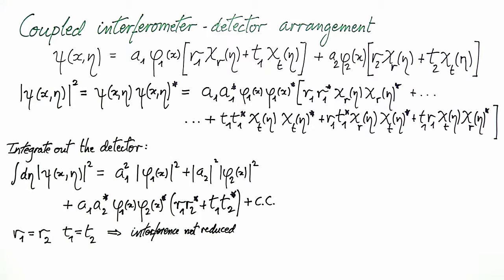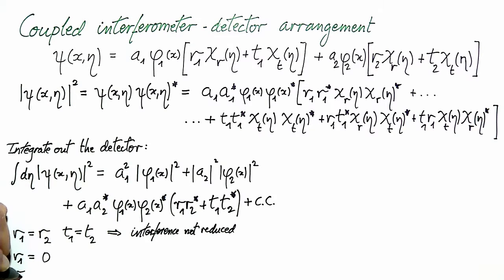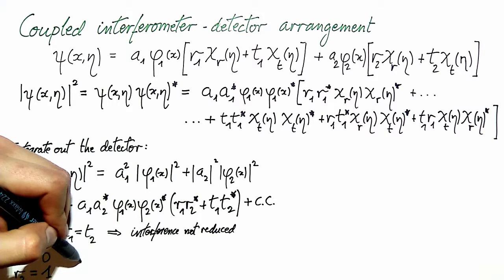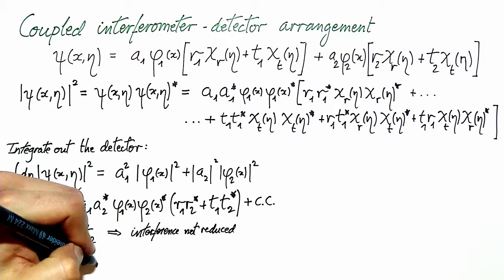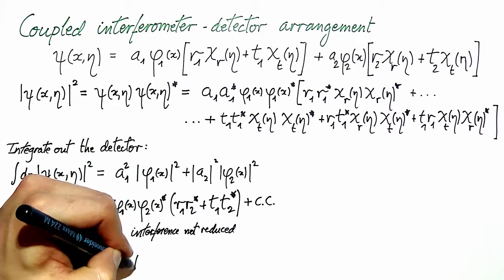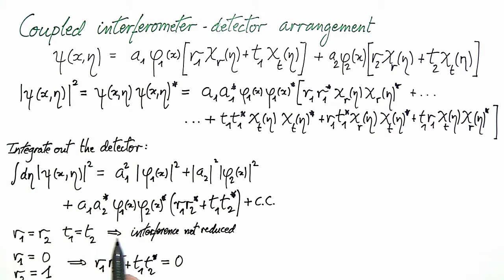If the detector is maximally sensitive — for example R1 = 0 and R2 = 1 — so the electron is transmitted with probability 1 if in arm 1, and if the electron is in arm 2 then reflection at the detector is certain, then in this expression we always have one of either R1 or R2 equal to 0, or either T1 or T2 equal to 0, so the whole interference term is always 0 and we have fully suppressed interference.